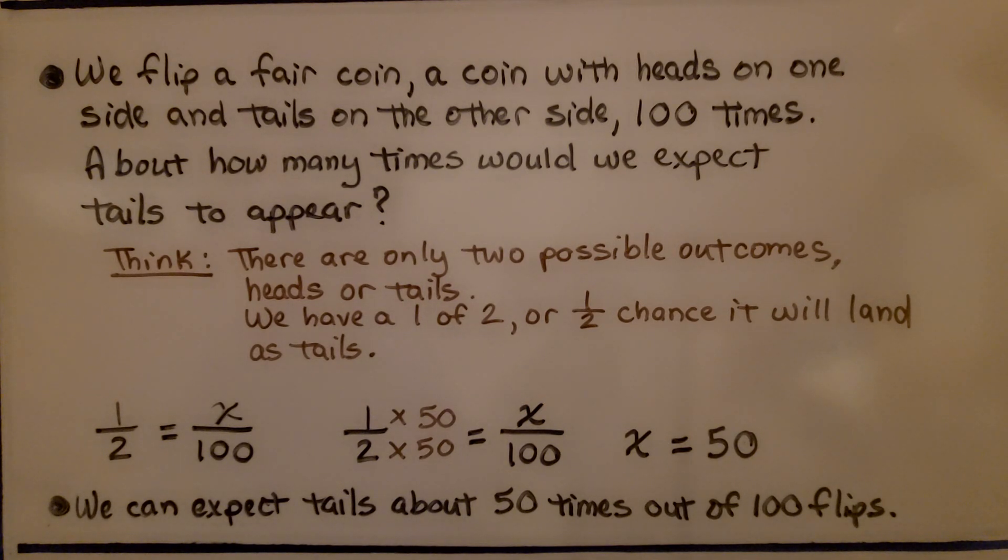or half of however many number of flips we did. If we did 50 flips, then we can expect tails to be 25 times. If we did 1,000 flips, half of that would be 500 times.